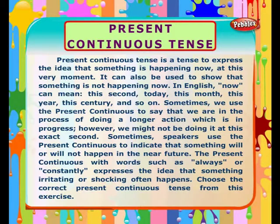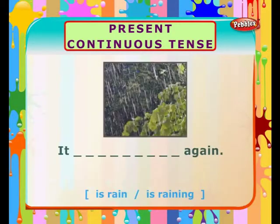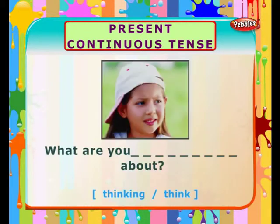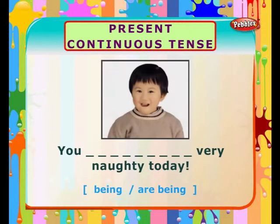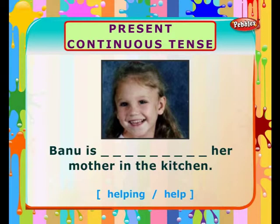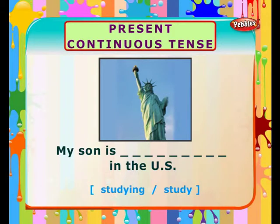Choose the correct present continuous tense from this exercise. It is raining again. What are you thinking about? You are being very naughty today. Banu is helping her mother in the kitchen. My son is studying in the US.